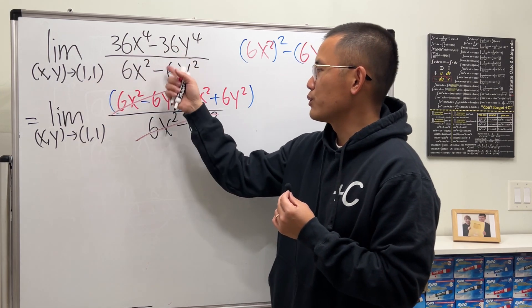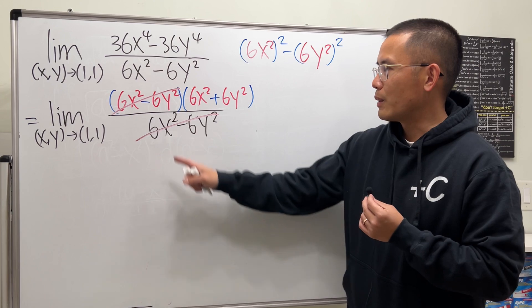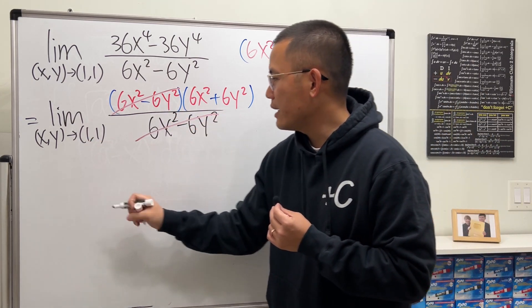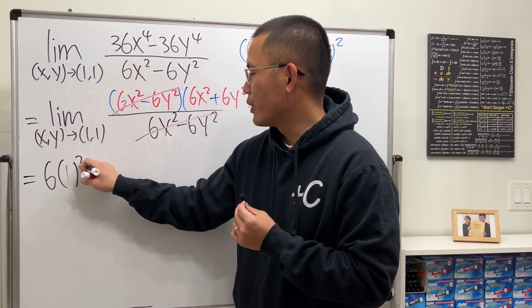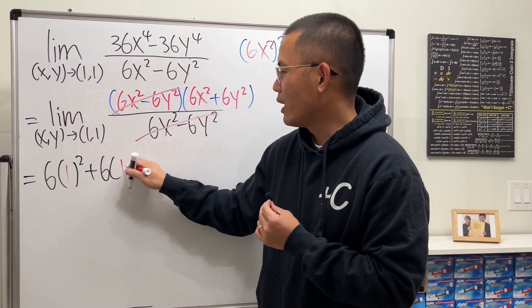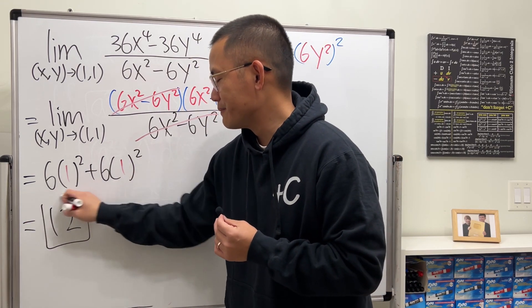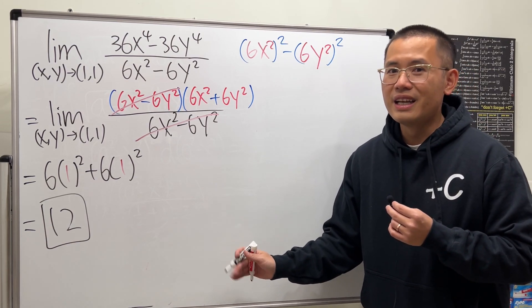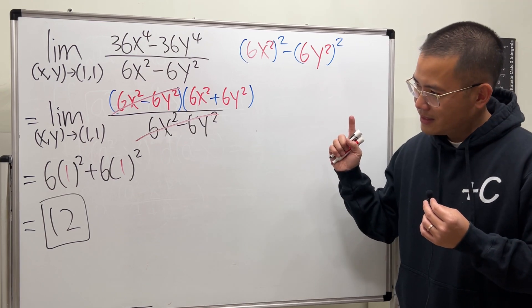I should have mentioned that if you plug in 1 and 1 into x and y, you have 0/0 in the beginning. But we just got rid of that, so now you can really just plug in 1 and 1 into x and y. So this is just 6(1)² + 6(1)², and that's 6 + 6 which is 12. I promise you that this is the answer. You can also check our best friend Wolfram Alpha - it's 12.